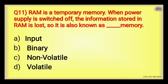Next: RAM is a temporary memory — primary memory has two types: RAM and ROM. RAM is temporary memory; when the power supply is off, all information in RAM is lost. That is why it is also called Dash memory. Options: Input Memory, Binary Memory, Non-Volatile Memory, or Volatile Memory. The right answer is Volatile Memory — volatile means everything vanishes, because the data is not saved and RAM is working only temporarily.